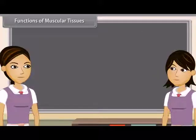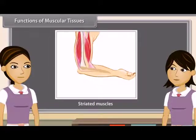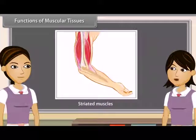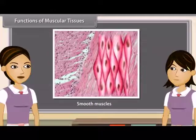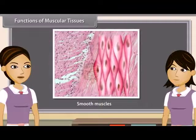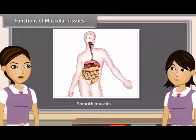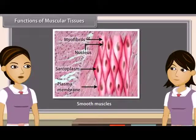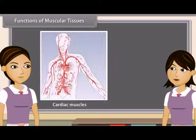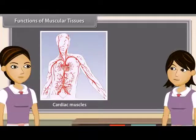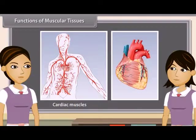Functions of muscular tissues: Striated muscles provide the force for locomotion and all voluntary movements of the body. Smooth muscles are involuntary and move food in the alimentary canal, and control the opening and closing of tubes. Cardiac muscles contract and relax rapidly, rhythmically, and tirelessly throughout life; this contraction and relaxation helps heart muscles to pump and distribute blood to various parts of the body.